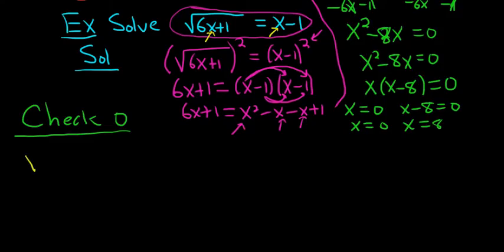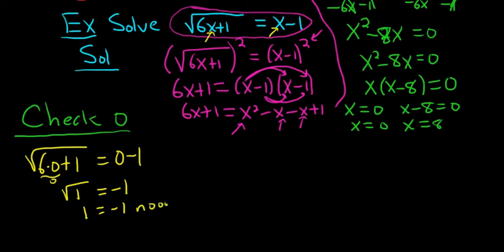Square root of 6 times 0 plus 1 equals 0 minus 1. So we have the square root of 1, because this is 0, 0 plus 1 is 1, equals negative 1. So 1 equals negative 1. It does not work. So 0 does not work.